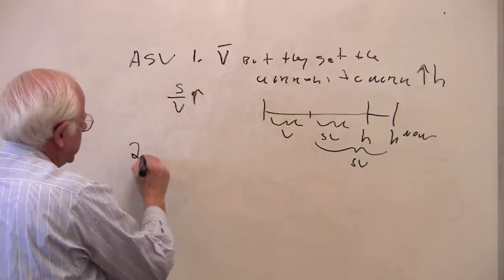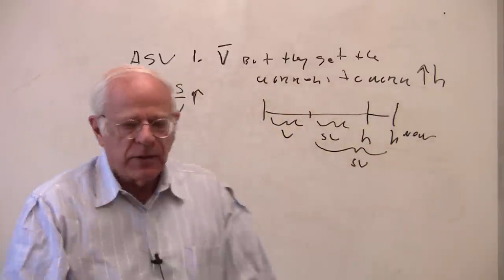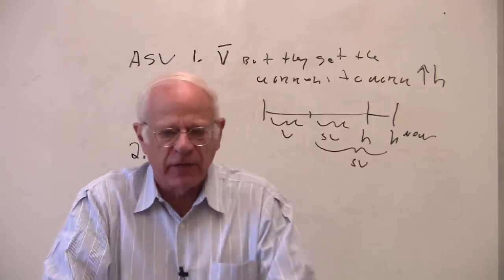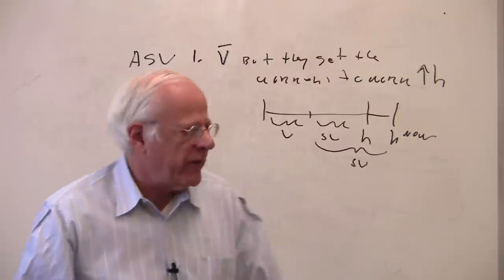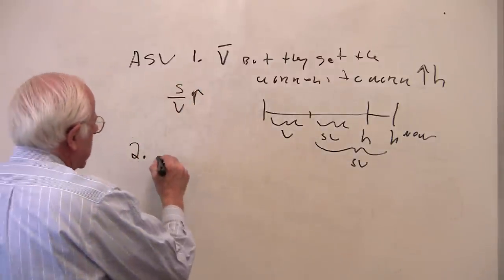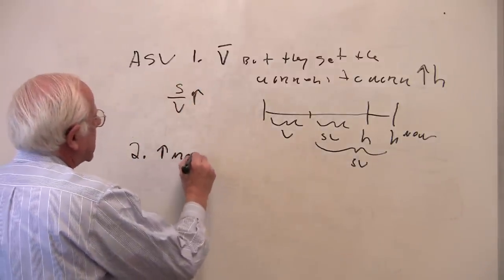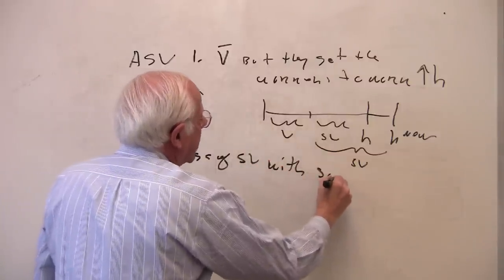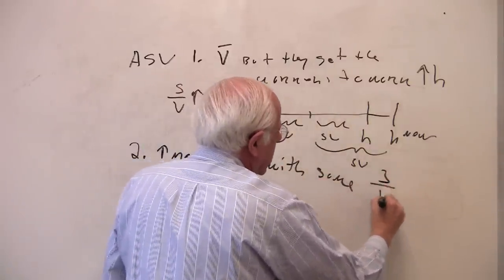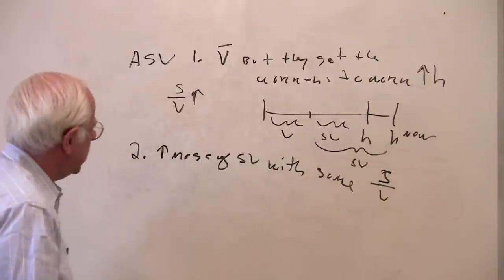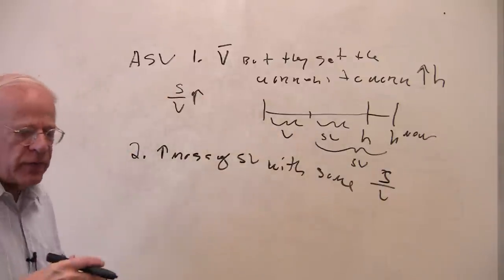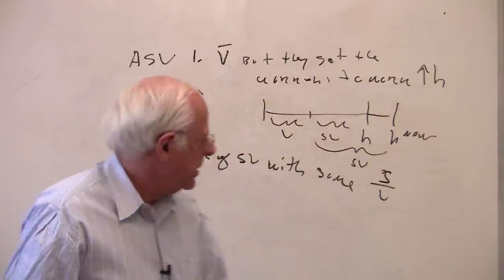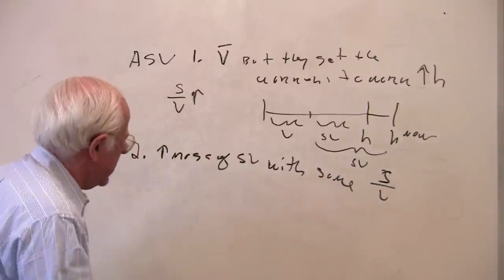That's one way. A second way that Marx talks about is getting more surplus — expanding the mass of surplus for the capitalists — with the same rate of exploitation. So the second way is to increase the mass of surplus with the same rate of exploitation.